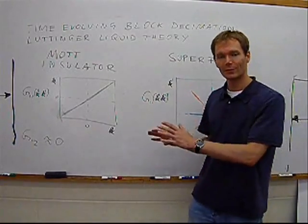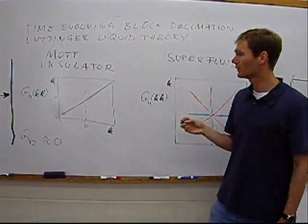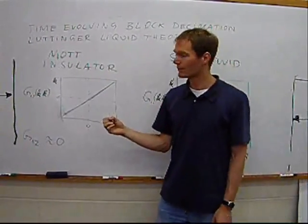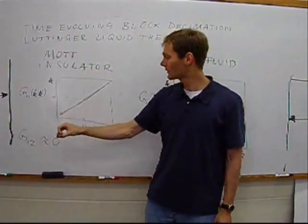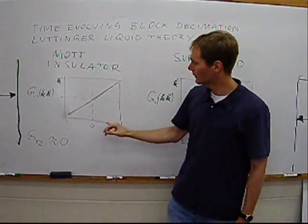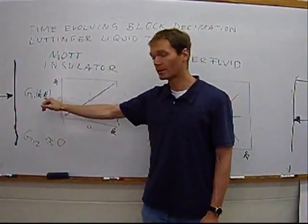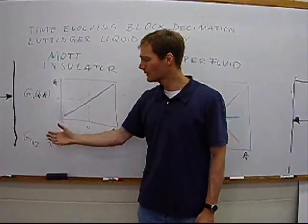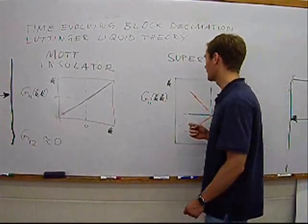We start out with two phases which are maybe better known. One of them is the Mott-insulating phase, and the other is the superfluid phase. For the Mott-insulating phase, we find that the same species noise correlation function has essentially a bunching-type character, where we find a delta function for equal momentum k and k prime, whereas the inter-species noise correlations essentially vanish.